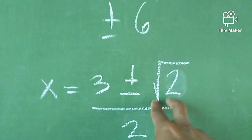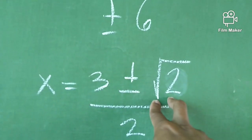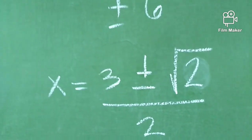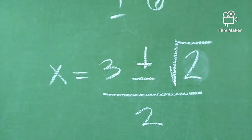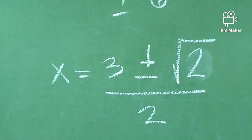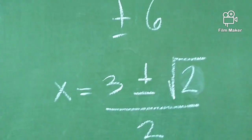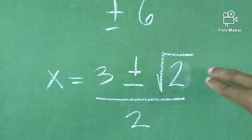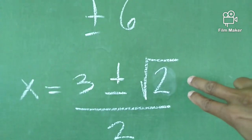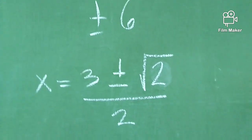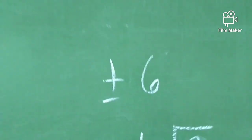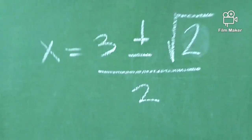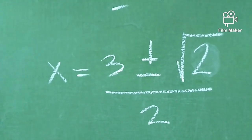We cannot simplify √2. Earlier, √4 can be simplified — the square root of 4 is 2. But in this case, √2 cannot be simplified. That means this is a non-real zero. The one above is a real zero, and this one is a non-real zero.